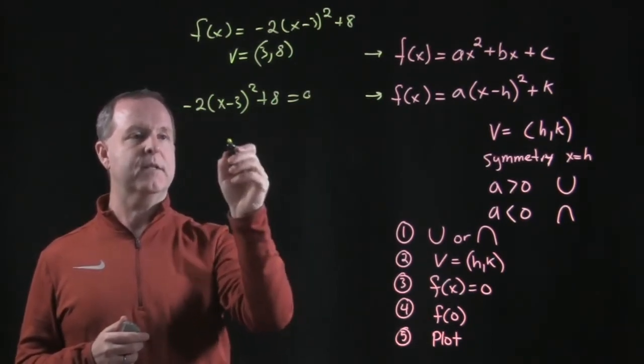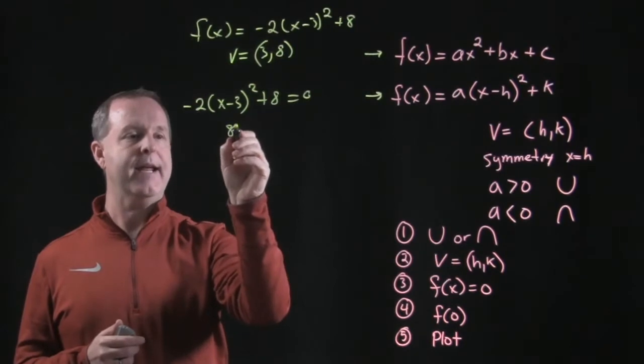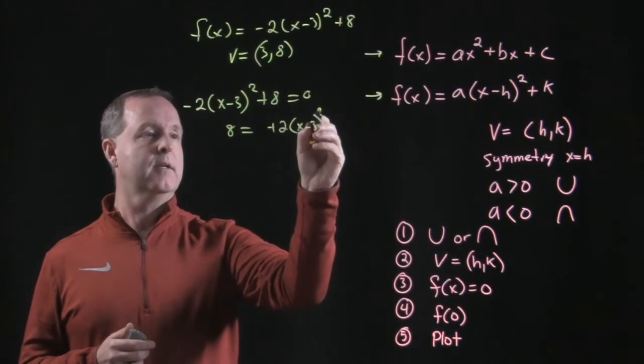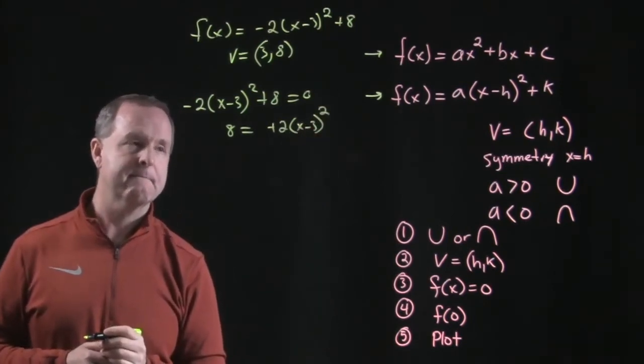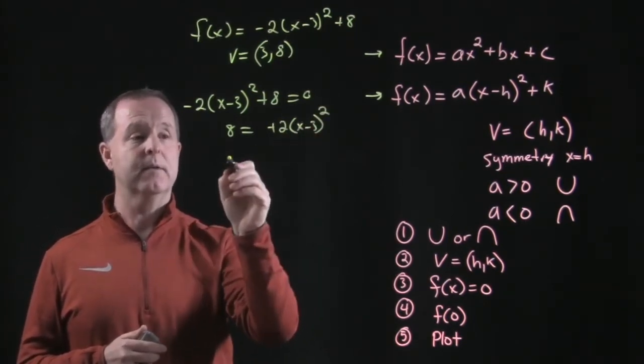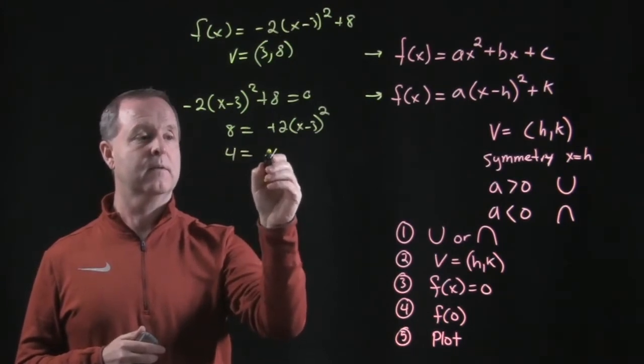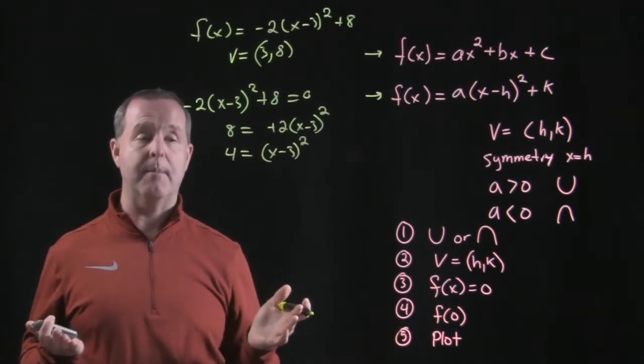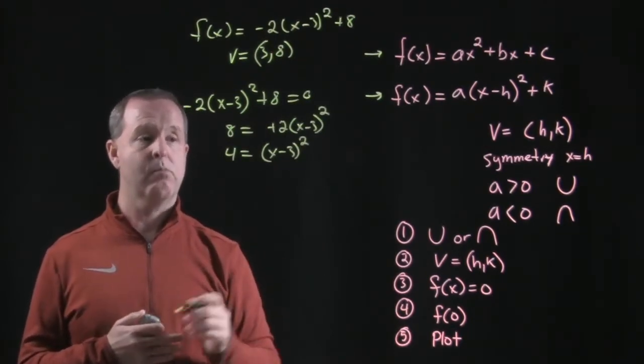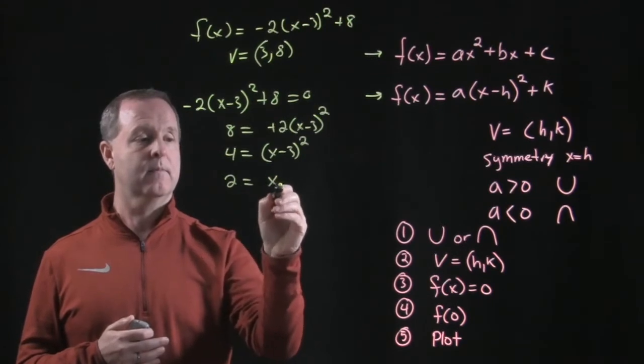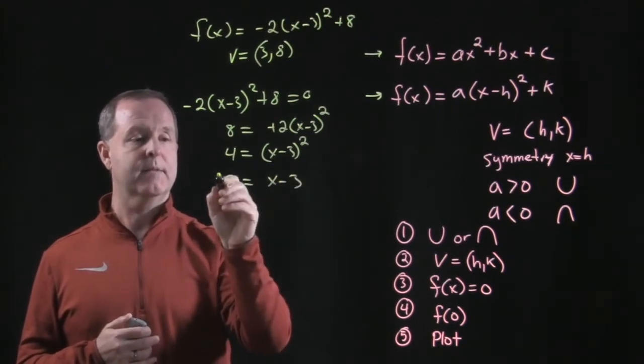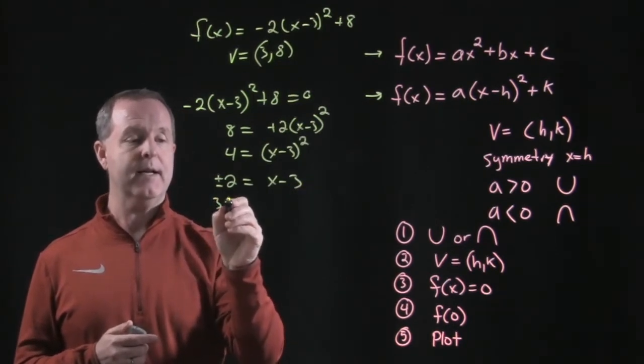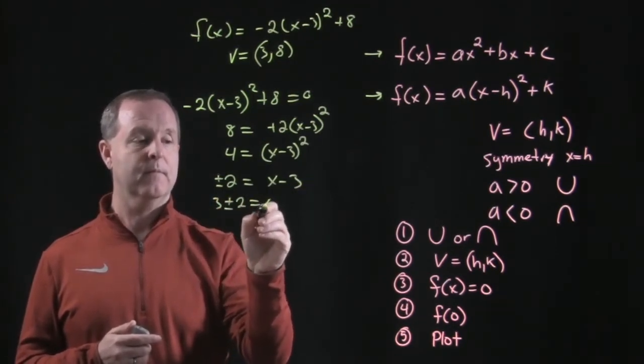Let's put the negative on the other side. So I'm going to have an 8 equals a positive 2 now, (x minus 3) squared. Let's divide both sides by a 2. Let's use the square root property and take the square root of both sides. And this can be a plus or minus 2. Add 3 to both sides. So I have 3 plus or minus 2 equals x.